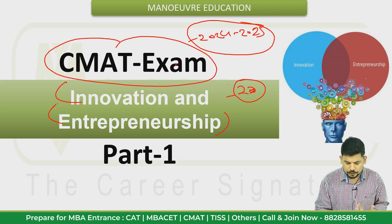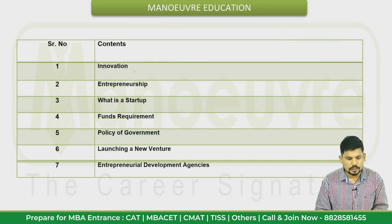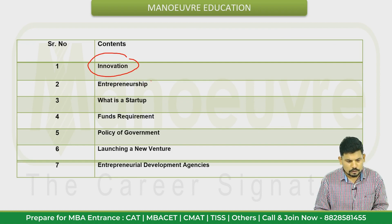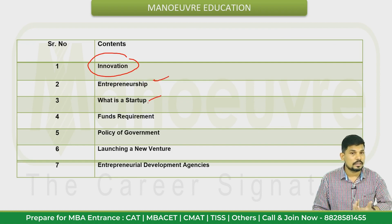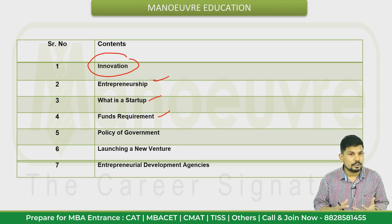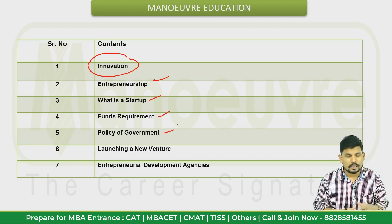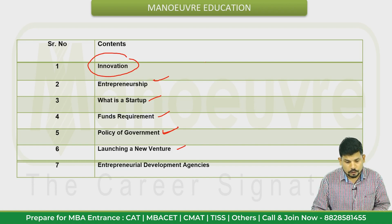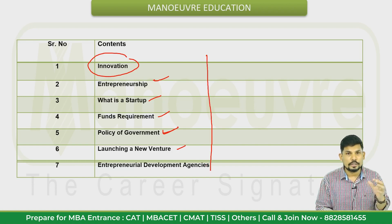Basically we will try to understand this section — what is its theoretical part and what type of questions come. In this part we will cover: what is innovation, entrepreneur-related concepts, startup-related concepts, funds requirement, sources of fund for starting a startup, and government policy related to entrepreneurship and launching a new venture.